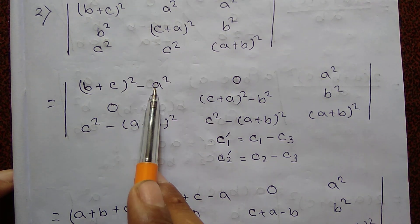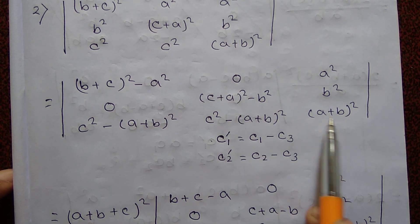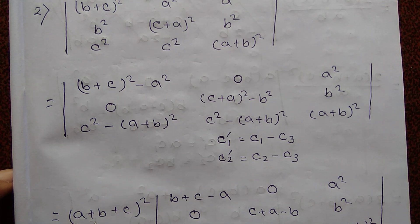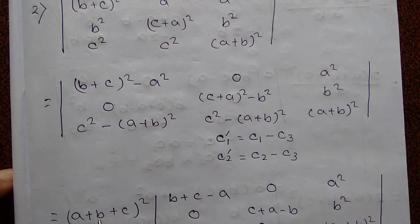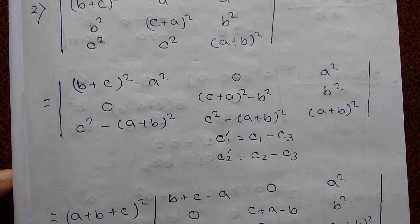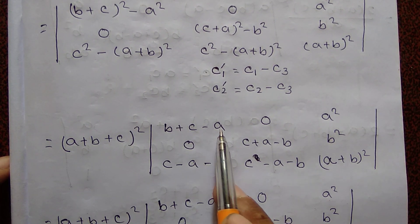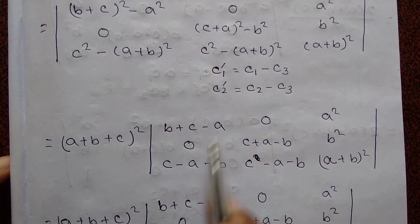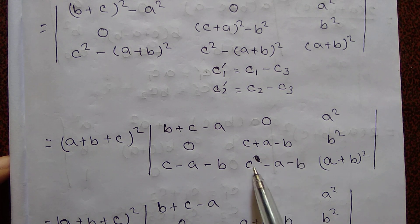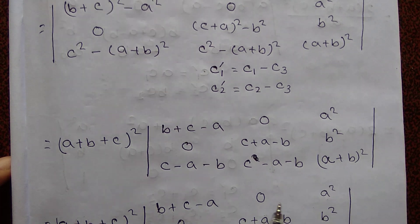Using the form a plus b into a minus b, we factor: first column common factor a plus b plus c, second column common factor a plus b plus c. The matrix reduces with entries: b plus c minus a, 0, c minus a minus b, 0, c plus a minus b, c minus a minus b, a square, b square, a plus b whole square.